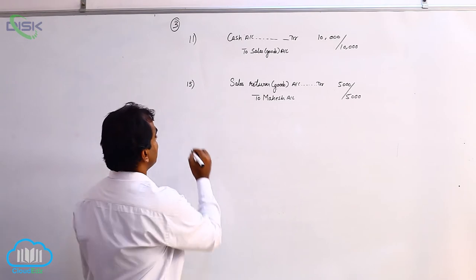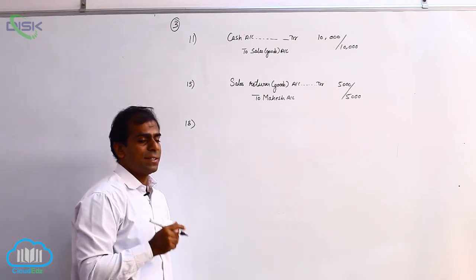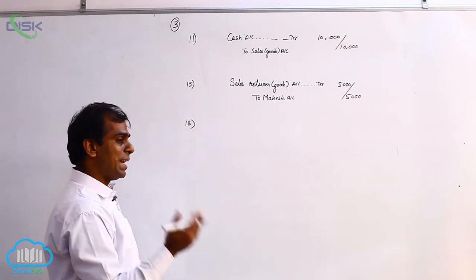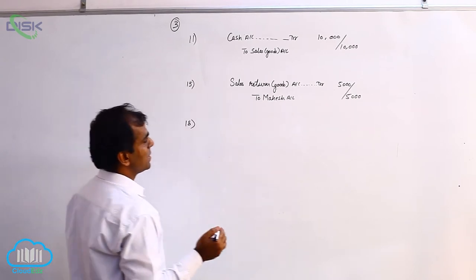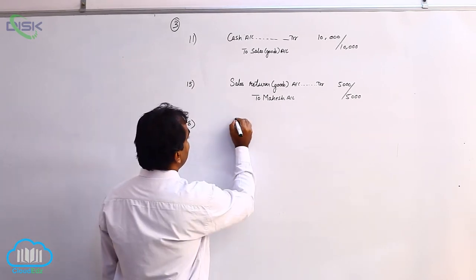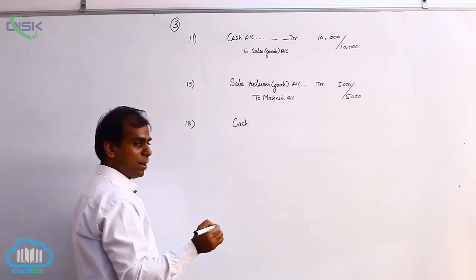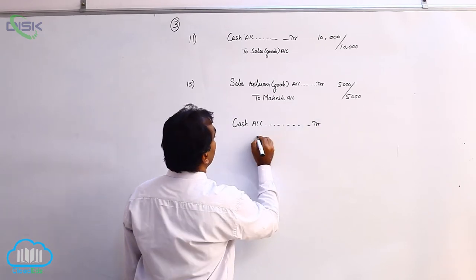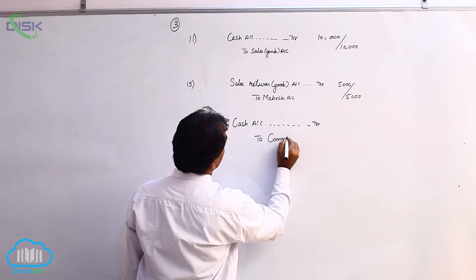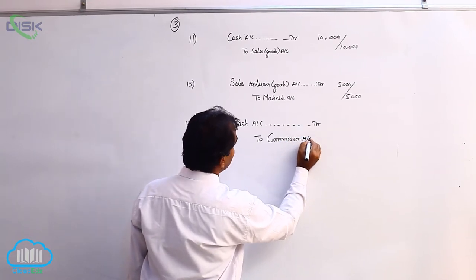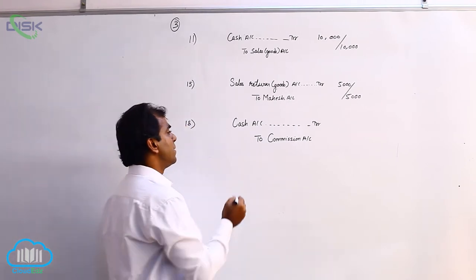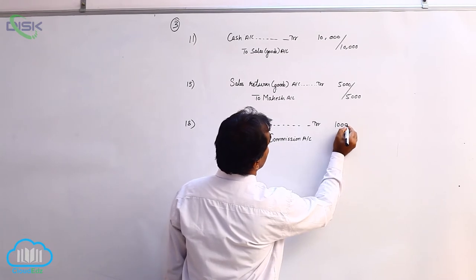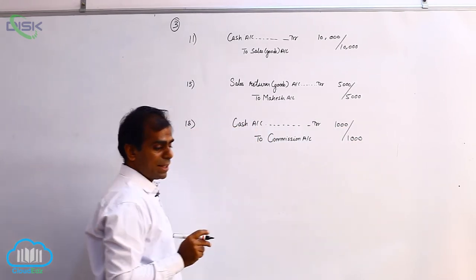The next transaction on 18th states commission received. Commission is an amount received or paid for some service. Here we are receiving money, meaning we would have done some service and are getting cash for it. Cash is a real account; we are getting cash means it is coming in — debit what comes in — so cash account debit. Commission received is income; income comes under nominal account, and we credit all incomes. So: Cash Account Debit to Commission Account, amount being 1,000. Narration: being commission received.